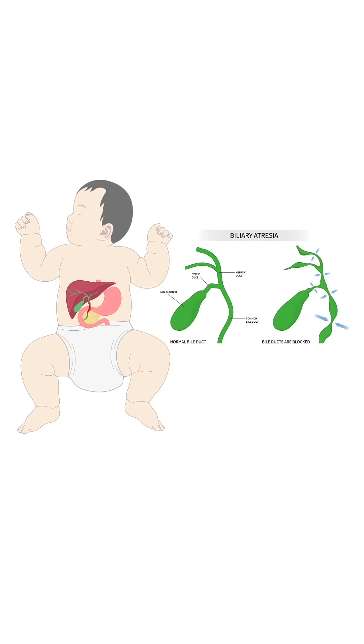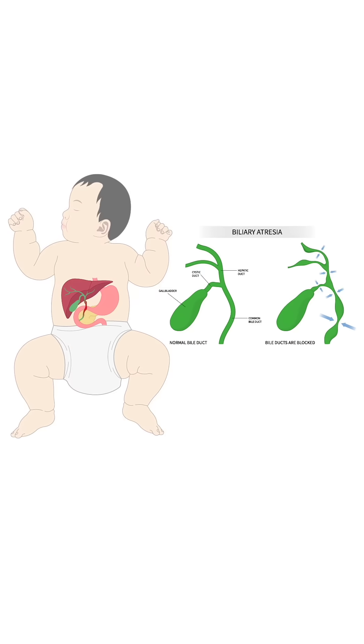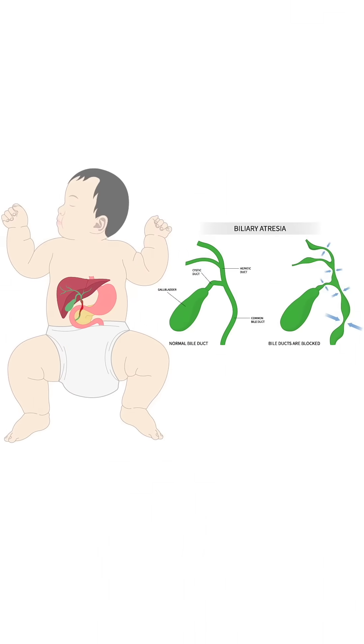When, due to any cause — such as liver immaturity, infection, damage from a metabolic process, or medication — the liver cannot process this bilirubin and cannot remove it from the body, we get jaundice. But jaundice is a sign of a disease, not a disease itself. It tells us that something is wrong with the liver, and we need to find out what.